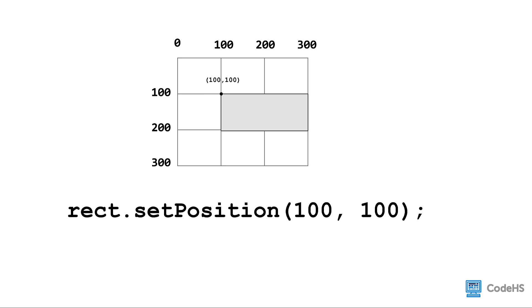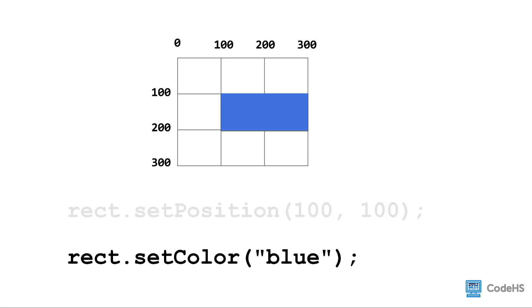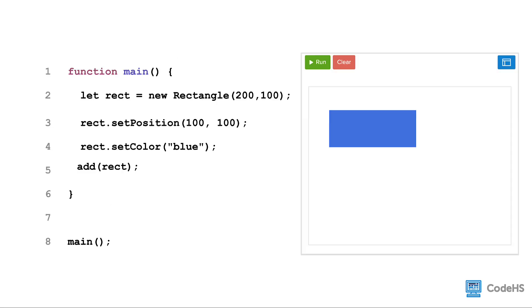Now to change the color, we write the name of the variable storing the shape, dot setColor, followed by parentheses. And between the parentheses, we write a string with the name of the color. In this case, the color of the rectangle will be set to blue.